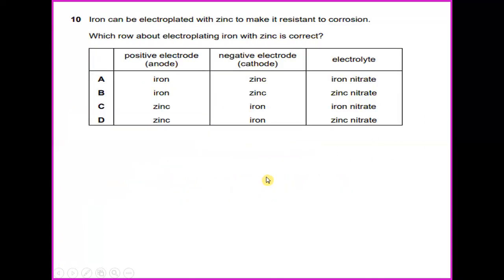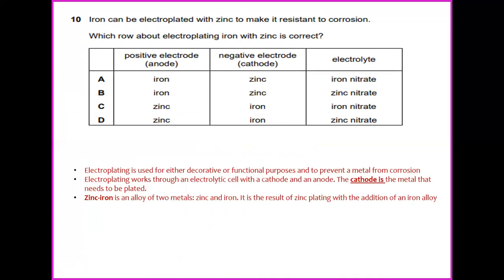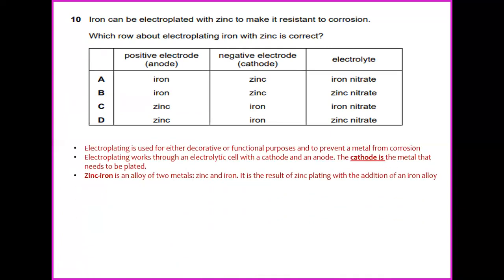Iron can be electroplated with zinc to make it resistant to corrosion. Which row about electroplating iron with zinc is correct? Electroplating is actually the process used for either decorative or functional purposes and to prevent a metal from corrosion. Electroplating works together with electrolytic cell with a cathode and anode. The cathode is the metal that needed to be plated. In this case, what is the cathode? The cathode is supposed to be iron.